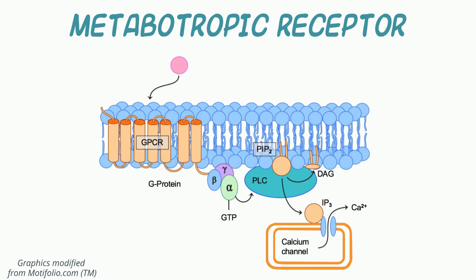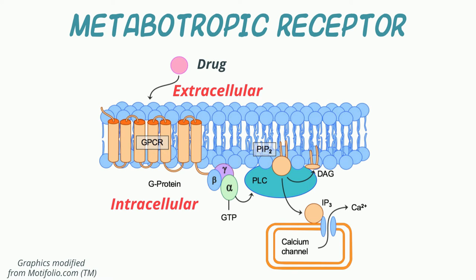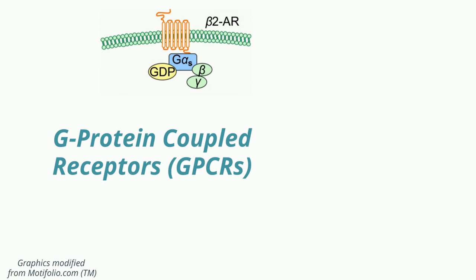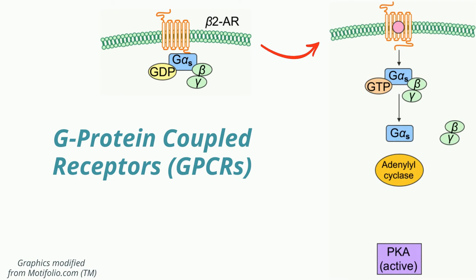The second receptor type based upon signal transduction are called metabotropic receptors, that act directly or indirectly on signal transduction enzymes, or are linked to enzymes that have an extracellular domain recognizing a drug and an intracellular domain that catalyzes the biochemical response. This receptor subtype includes what we call G protein-coupled receptors, or GPCRs, which can be GS — that is stimulatory — GI that is inhibitory, or GQ that is linked to the enzyme phospholipase C beta and impacts intracellular calcium handling.